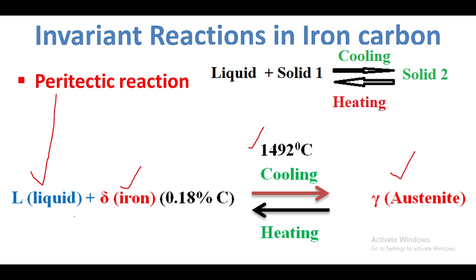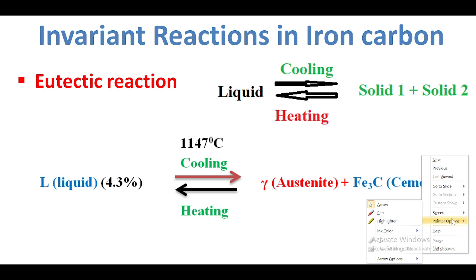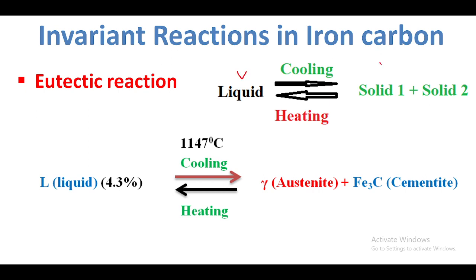This is the peritectic reaction at a temperature of 1492 degrees Celsius. Another reaction is the eutectic reaction. In this eutectic reaction, one liquid is converted to two solid solutions.